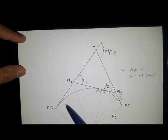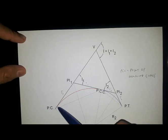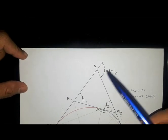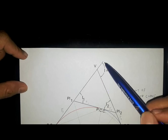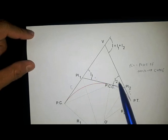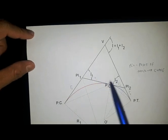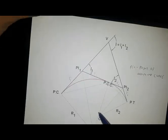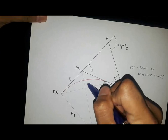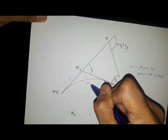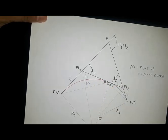When we extend the tangent of the first curve and the tangent of the second curve, the point of intersection is the vertex. The angle it makes is equal to the central angle of the first curve plus the central angle of the second curve. We still have the external distance and the middle ordinate of the second curve.